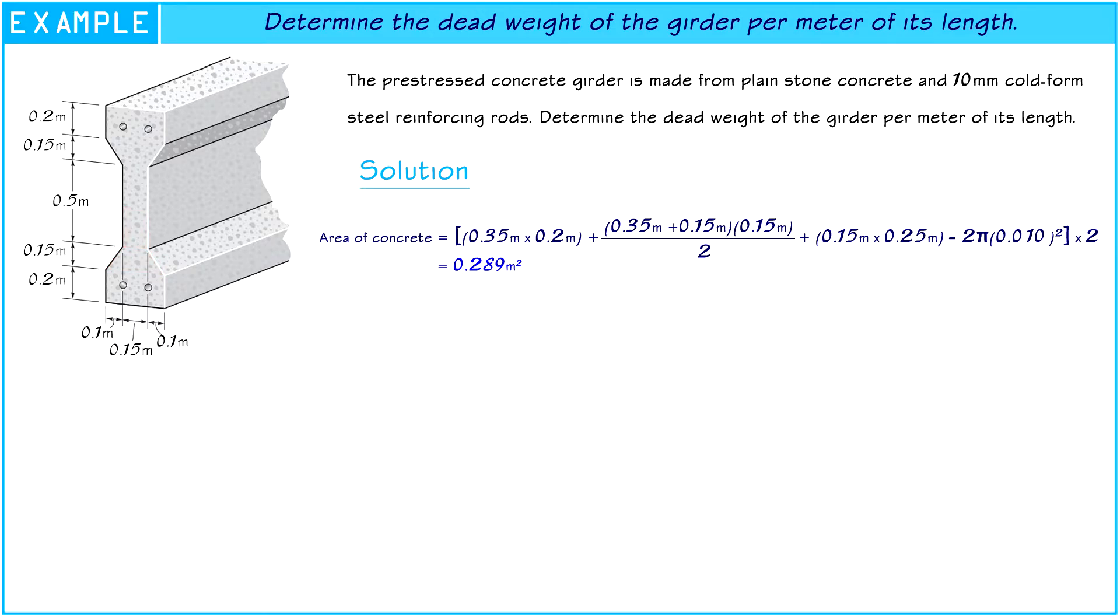After we found half of the area, we must minus the area of steel reinforcement. Because the density of steel is different from density of concrete. If you didn't minus the area of steel, the answer of this problem is wrong. After that, we need to multiply by 2 to find the complete area of prestressed concrete.